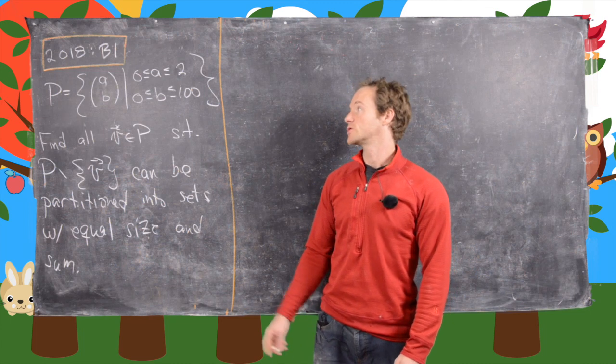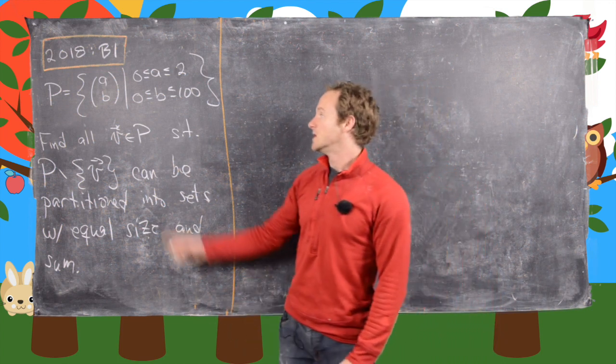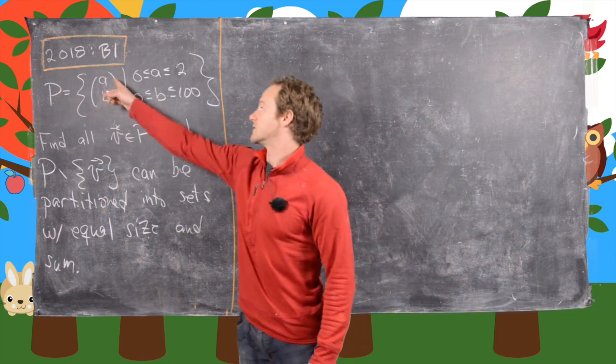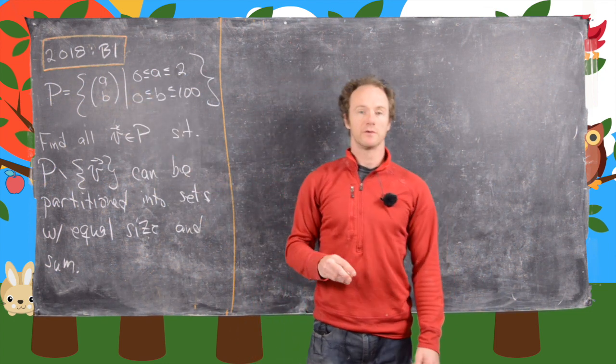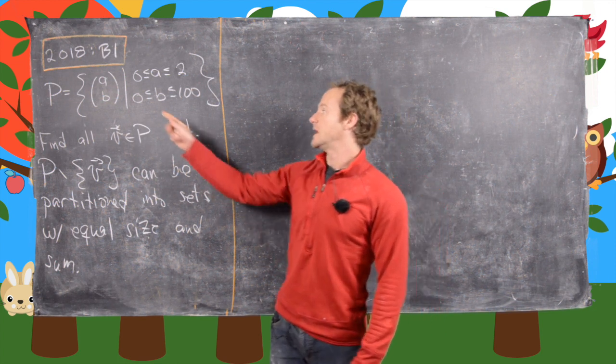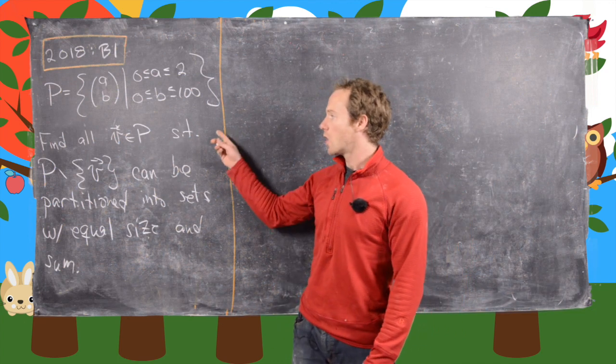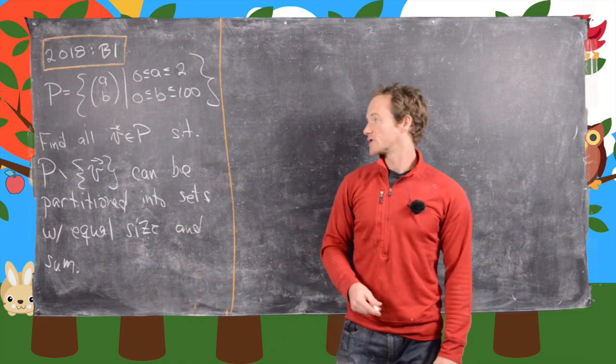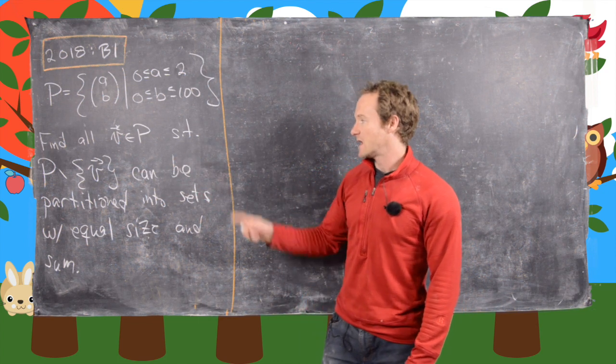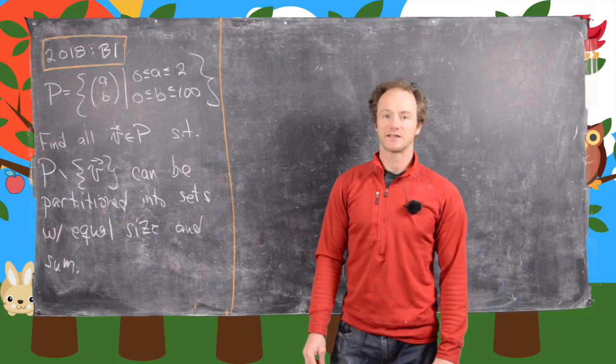In this video we're going to look at a solution to B1 from the 2018 Putnam exam. It involves this set of vectors defined as follows: (A,B), and A runs between 0 and 2, so there are three choices for A: 0, 1, and 2. B runs between 0 and 100, so there are 101 choices for B. The goal is to find all vectors V such that when we extract V from that set, it can be partitioned into two sets of equal size and sum.